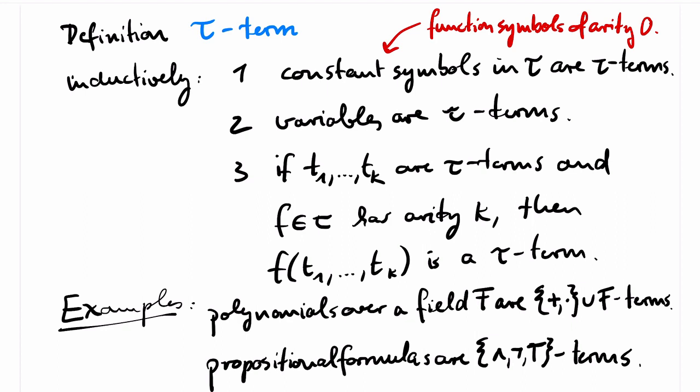As in the case of the syntax of propositional logic, one can show that each tau term has a unique tree-like structure. So just from looking at the string, we can reconstruct how the string was built inductively.